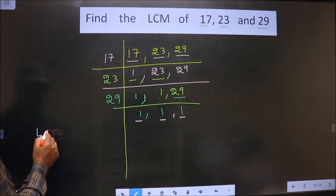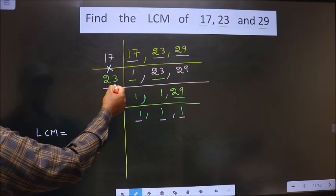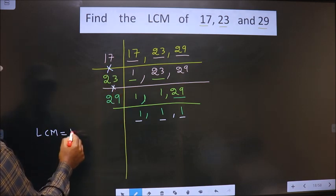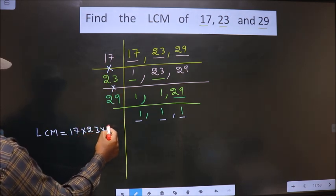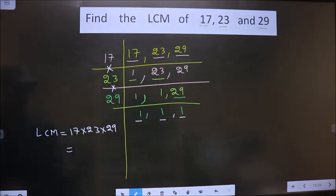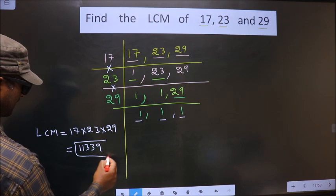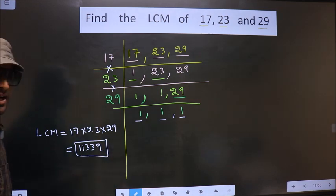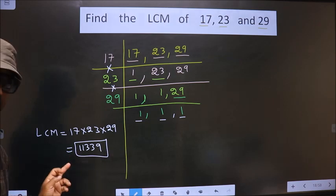So now our LCM is the product of these numbers: that is 17 into 23 into 29. You multiply all this, you get 11,339.